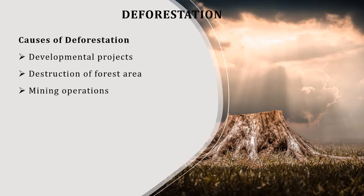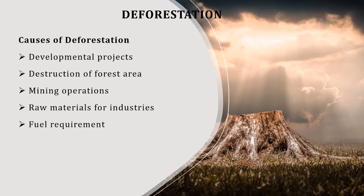Raw material for industry: wood is an important raw material for various purposes, such as making boxes, furniture, and paper. So deforestation keeps happening to get raw materials for industry. Fuel requirement: wood is an important fuel for rural and tribal populations, and most of their activities depend on fuel gathered from forest cutting.